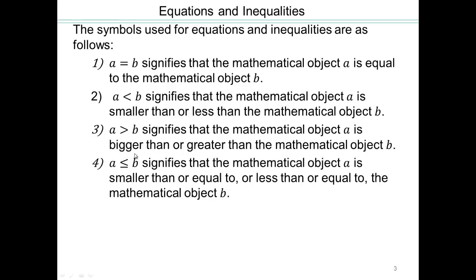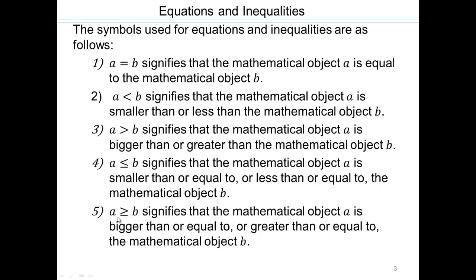A is less than or equal to b. We're saying a can be smaller than b, or it can be equal to b. That's what this little bar on the bottom means. And this would be a is greater than or equal to b. So a can be bigger than b, or you're allowing for the possibility for a to equal b.